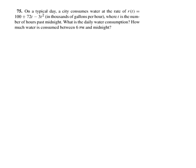Okay, on a typical day, a city consumes water at the rate of r(t) = 100 + 72t - 3t² in thousands of gallons per hour, where t is the number of hours past midnight. And then you're asked, what is the daily water consumption? So let's do that first.